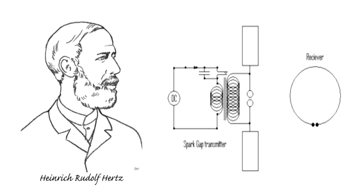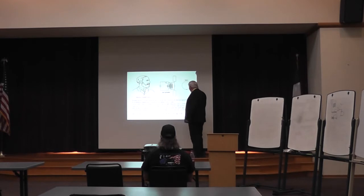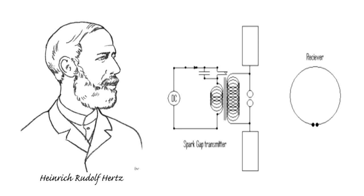He had a pretty successful life up until then, but he died of an incurable disease. He was born in 1857 and lived to 36. What he did was he made this first primitive transmitter.